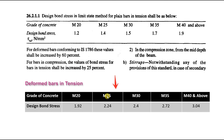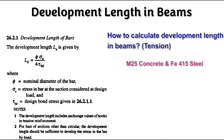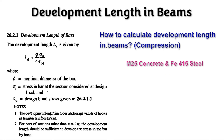For deformed bars in tension, the values are already increased by 60 percent in the table shown. For compression, plain bar values are first increased by 25 percent, then further increased by 60 percent for deformed bars. Now let us calculate the development length in tension for M25 concrete and Fe415 steel. σs = 0.87 × fy = 361.05 N/mm². For M25 concrete, τbd = 2.24. The development length works out to 40.295φ.